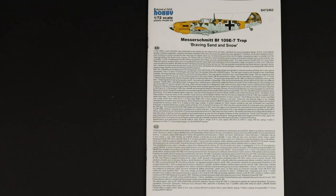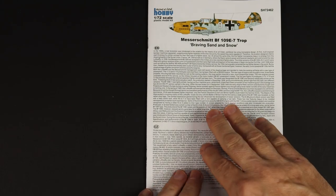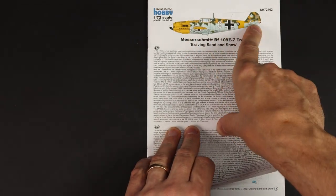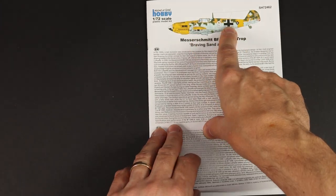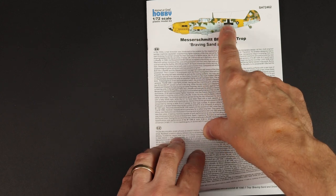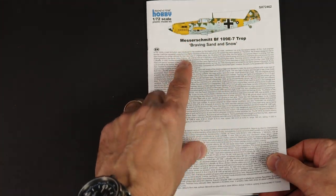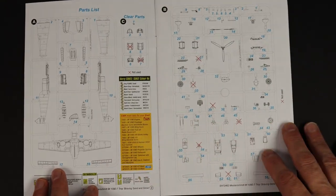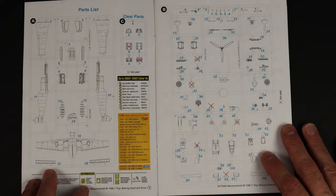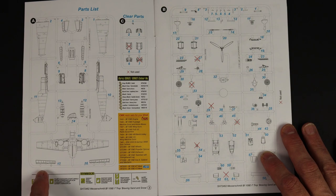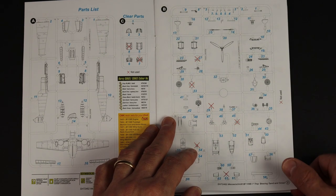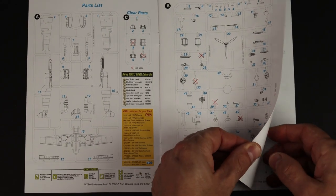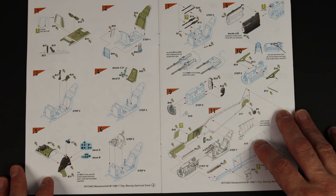Okay, starting off with the instructions, really nice paper actually, nice and smooth and not too glossy. That's the box art profile on the front. Quite a lot of text going on and then over the page to the parts list, so quite a few parts not for you, so I'm assuming that's for the other versions of the E.